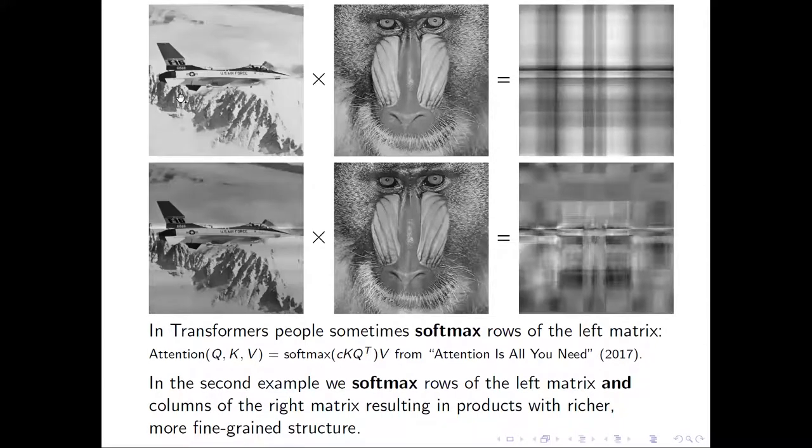Let's see a different example. Plane by monkey. Again, enough information, but if we apply softmax to rows of the left matrix and columns of the right one, we have product with richer, more fine-grained structure.